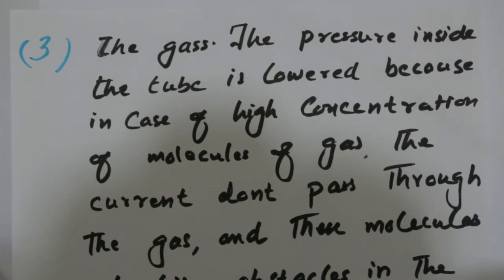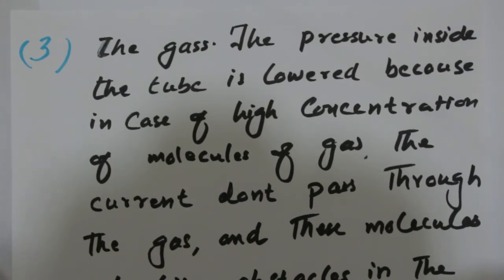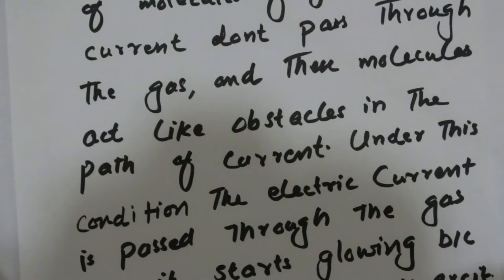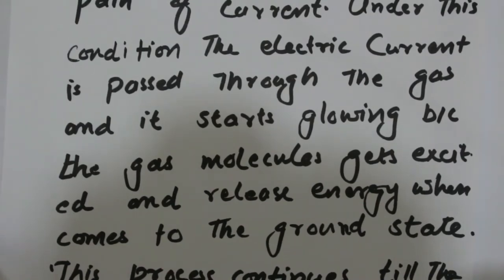When the pressure inside the discharge tube is decreased and the electrodes are connected with the battery, the electric current passes through the gas molecules and the tube starts glowing. The tube starts glowing because when the electric current passes through the gas molecules, the molecules go to an excited state, and when they return to the ground state they release energy in the form of light. This process continues as long as the electrodes are connected with the battery.